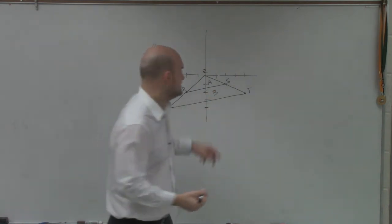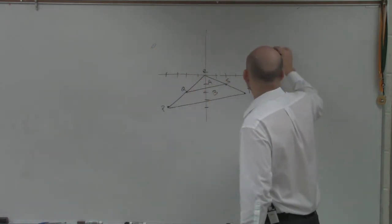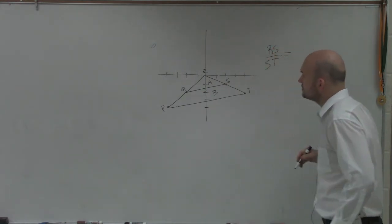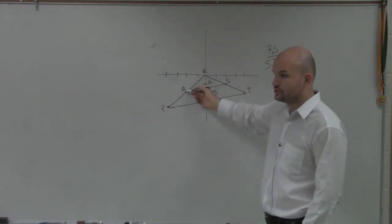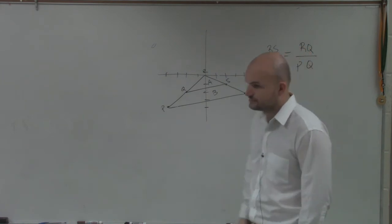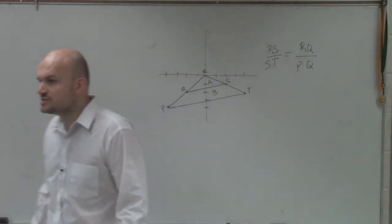So you can see that these are going to be proportional to each other. So you could say rs over st is equivalent to rq over pq. Those are proportional sides.